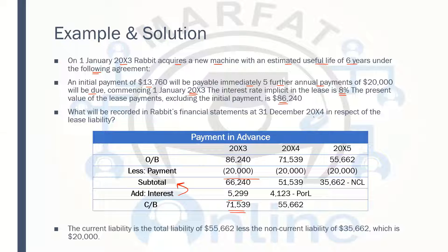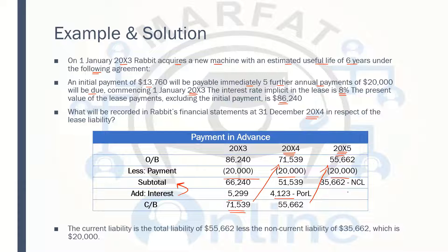Because they are asking for 20X4, we are making the financials for 20X4, but we need to put an extra working for 20X5. This becomes the opening balance, then again deduct the payment, get the subtotal, apply the interest — this is the finance cost — then get the closing balance. Again, this becomes the opening balance, deduct the payment, and then the subtotal is your non-current liability. The difference between these two is your current liability, which is $20,000.